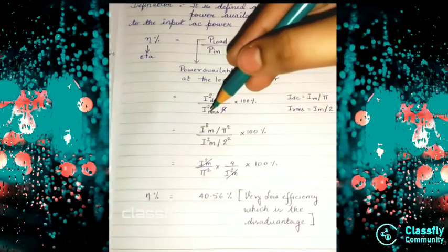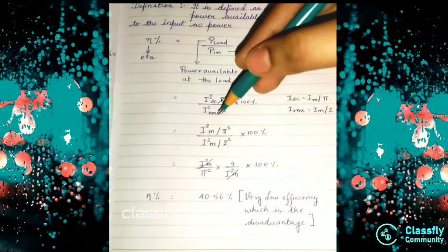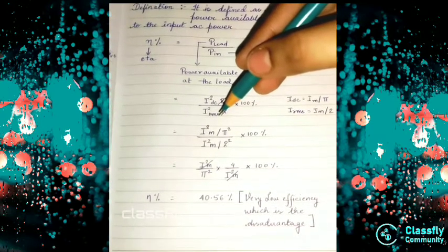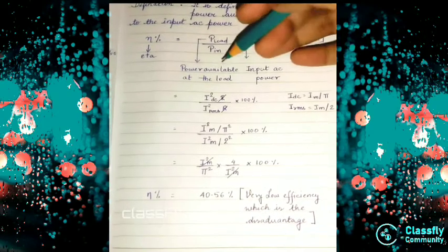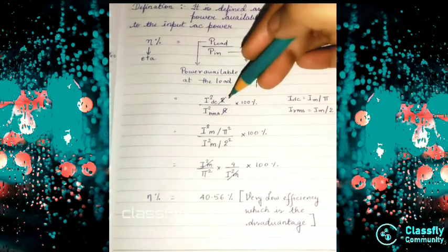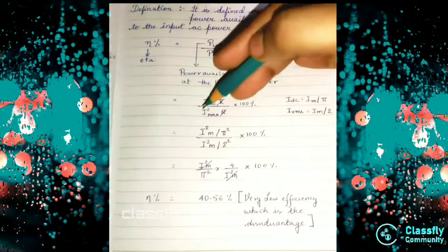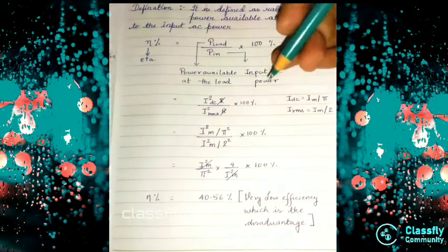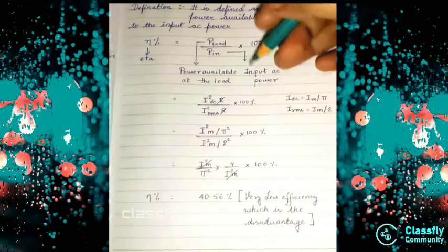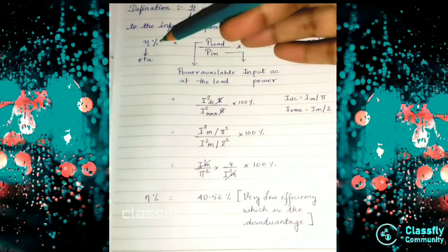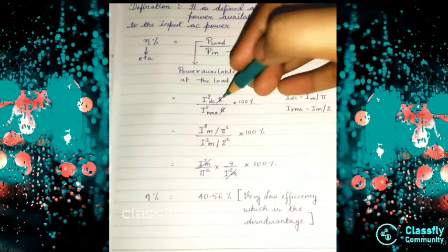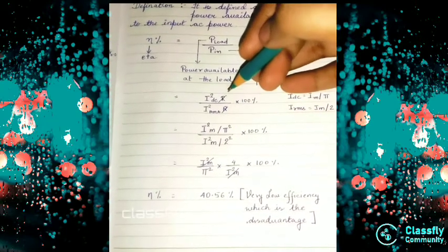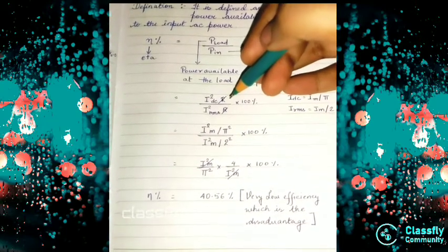P_in = I²_RMS × R, where RMS means root mean square. So P_load = I²_DC × R and P_in = I²_RMS × R. We multiply by 100 percent because efficiency is always in percentage. Since R is the same in both, we can cancel them out.